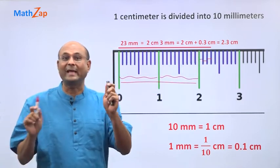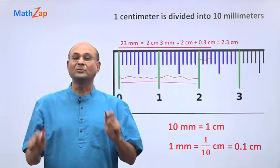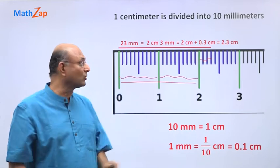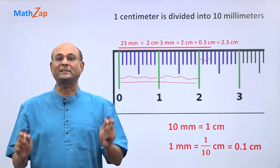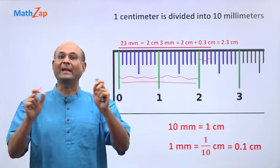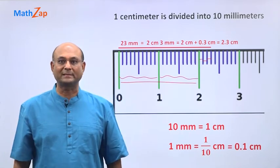So 23 millimeters or 2.3 centimeters — that is the length of this red line segment. I hope you have understood how to use a ruler to measure the length of line segments.